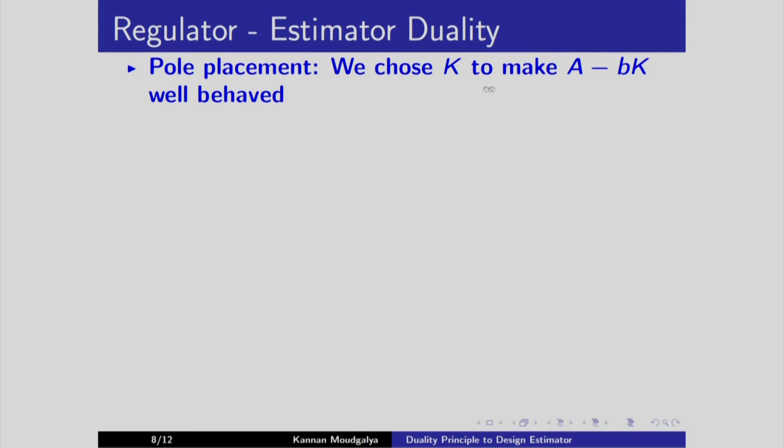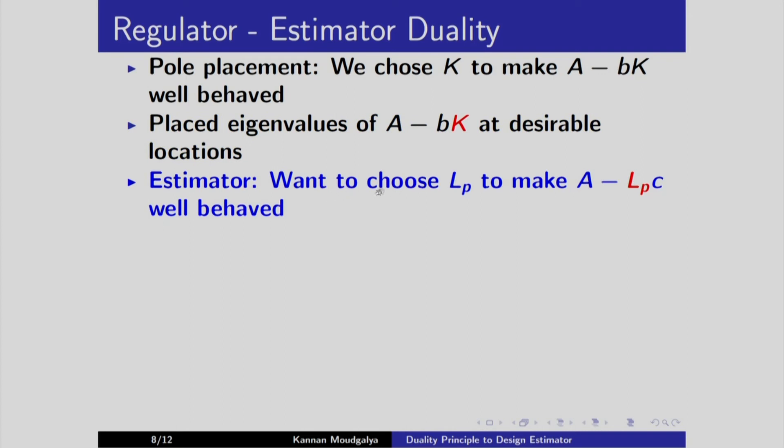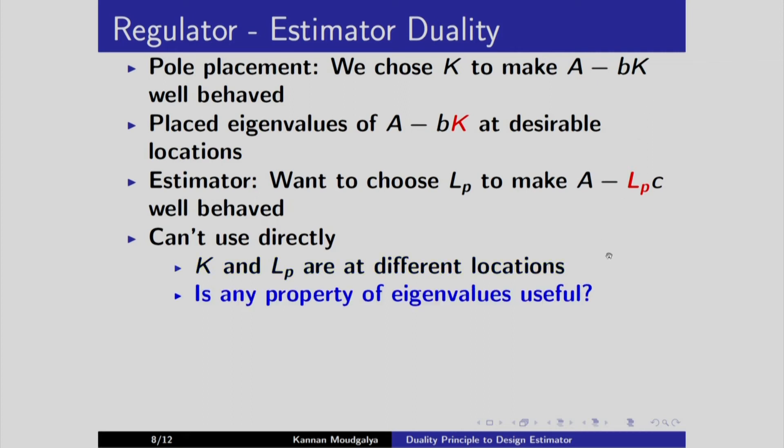In pole placement, we chose k to make A minus Bk well behaved. We placed the eigenvalues of A minus Bk at desirable locations. I have written this k in red. The reason will become clear shortly. Estimator, we want to choose Lp to make A minus Lpc well behaved. Lp is coming on the left hand side. Notice the locations. We cannot use the formula that we derived here directly. The reason is k and Lp are at different locations. I have a question. Is any property of eigenvalues useful?